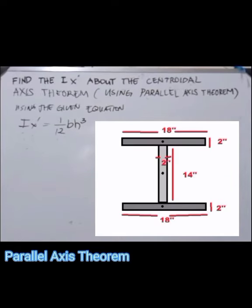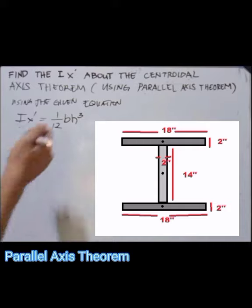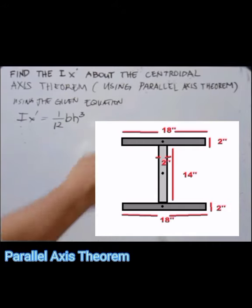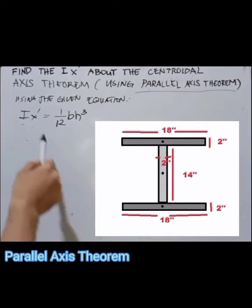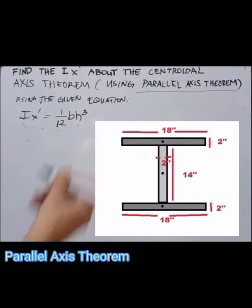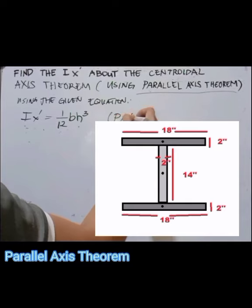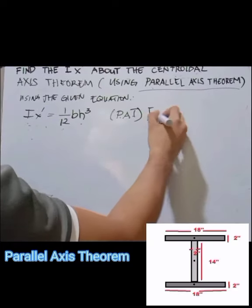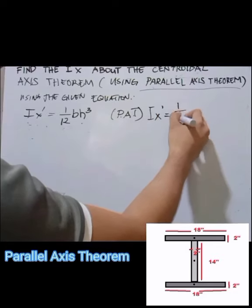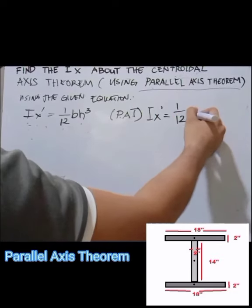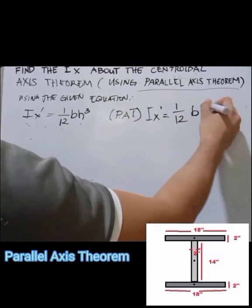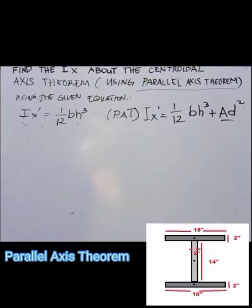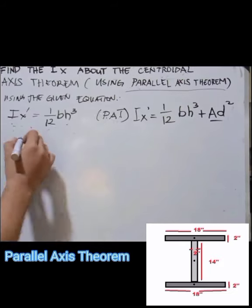Find Ixx, or Ix', about the centroidal axis using the parallel axis theorem. Using the given equation, Ix' = (1/12) bh³ + Ad². It is understood that the I-beam is divided into three rectangles, with dimensions in inches.